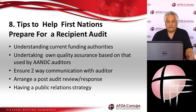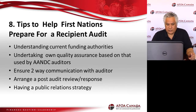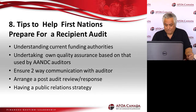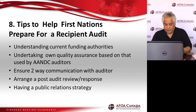Tips to help First Nations prepare for a recipient audit include understanding current funding authorities, undertaking own quality assurance based on that used by Aboriginal Affairs auditors, ensuring two-way communication with the auditor, arranging a post-audit review and response, and having a public relations strategy. First Nations should understand current funding authorities in place for which they receive funding. Funding models include set, flexible, fixed, and block. Set authorities allow for the least flexibility while block authorities allow for the most. Flexible authority allows First Nations to keep a surplus. Fixed authority allows First Nations to keep a surplus if a plan is set out within 90 days. Block funds can be spent on community priorities and grants have no strings.